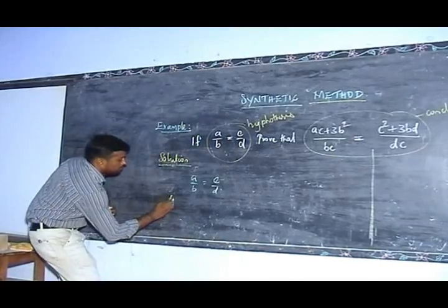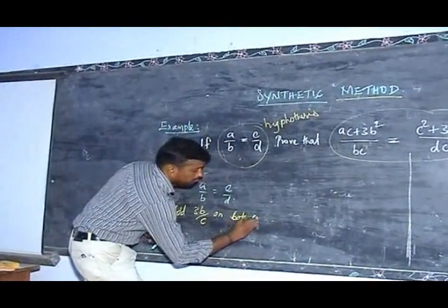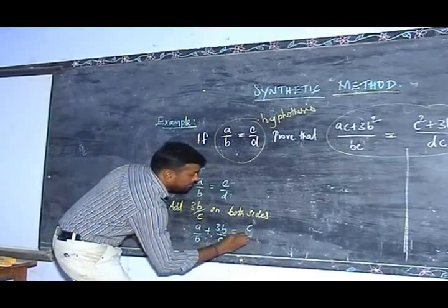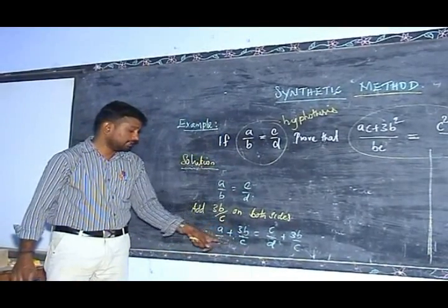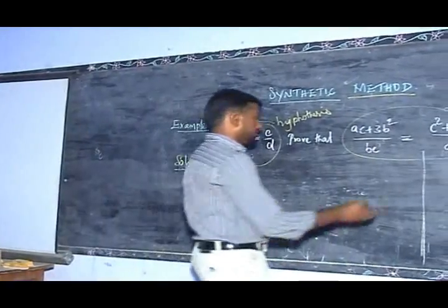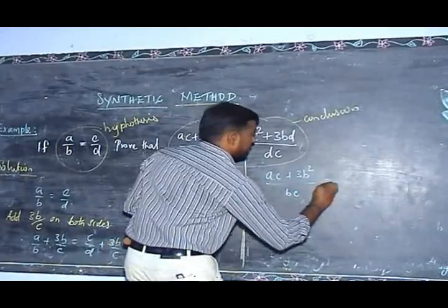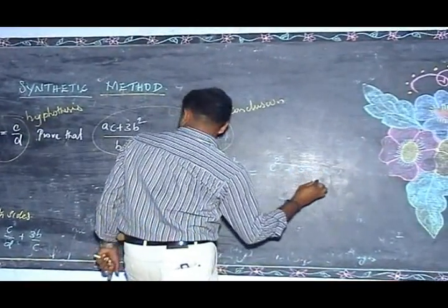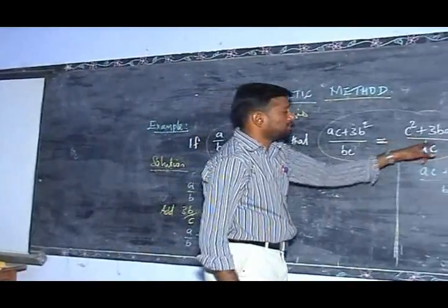Take the hypothetical part: a/b is equal to c/d. Then add 3b/c on both sides. We get a/b + 3b/c on the left side, equal to c/d + 3b/c on the right side. Taking the LCM on the left side, since b and c are in the denominators, we get (ac + 3b squared) / bc. Similarly, taking the LCM on the right side, we get (c squared + 3bd) / bc. Therefore, (ac + 3b squared) / bc is equal to (c squared + 3bd) / bc.